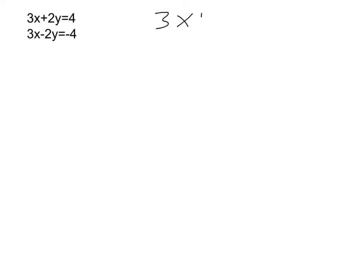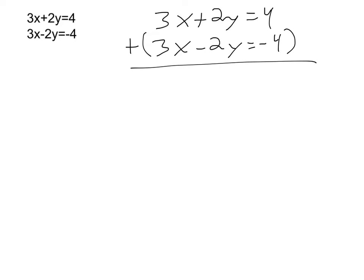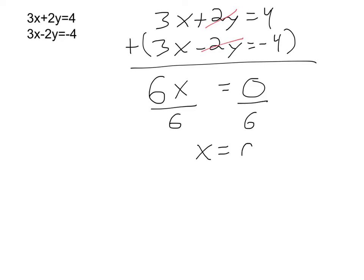We're going to take 3x plus 2y equals 4, and 3x minus 2y equals negative 4, and add both sides of the equations. Because they're lined up, we can combine like terms by adding straight down. 3x plus 3x gives me 6x. 2y plus negative 2y cancels out — that's what's being eliminated. Then 4 plus negative 4 also cancels, giving 0. So we have 6x equals 0. Dividing each side by 6, x equals 0.